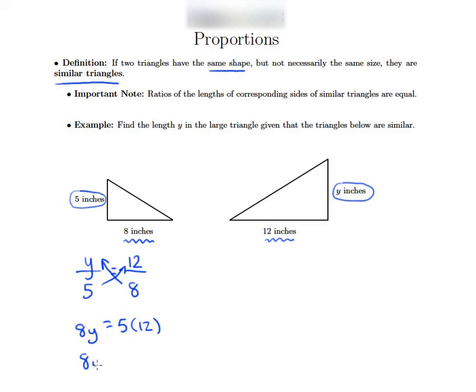So we have 8y equals 5 times 12, and 5 times 12 is 60. So of course, we finish this out by taking both sides divided by 8, and that will get y all by itself.